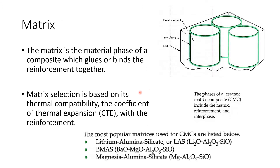The matrix is just a material phase of your composite. The matrix binds the reinforcement inside together. Selection of the matrix is based on its thermal compatibility, temperature, and coefficient of thermal expansion (CTE). Temperature can mess things up, so compatibility is very important. Temperature and pressure are critical to keeping the structure in the intended state.